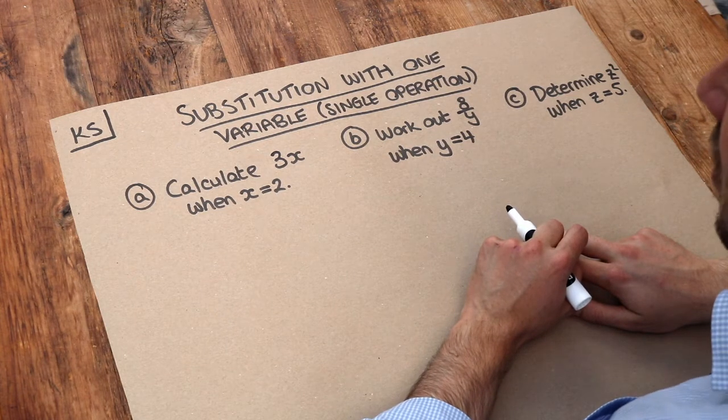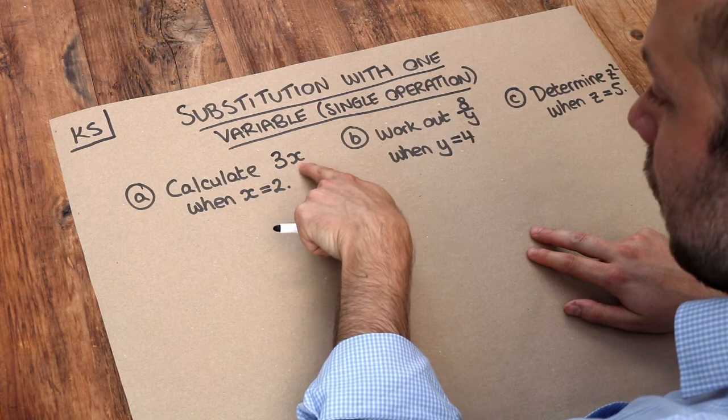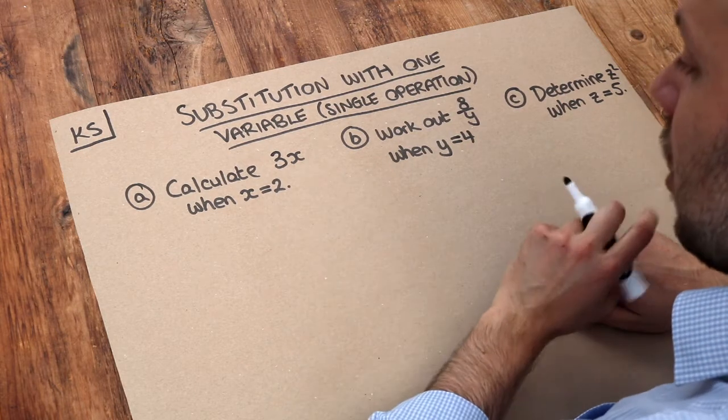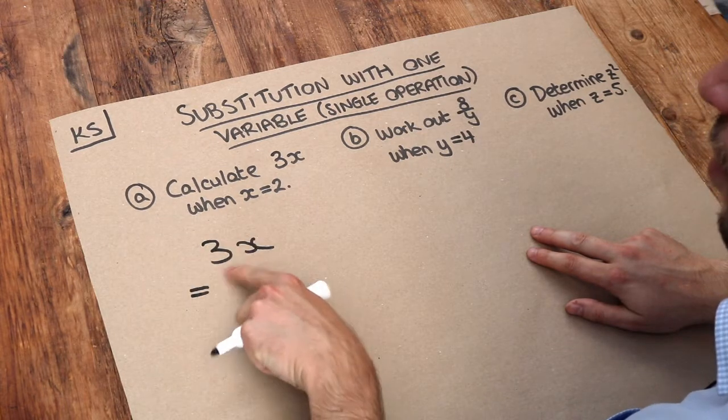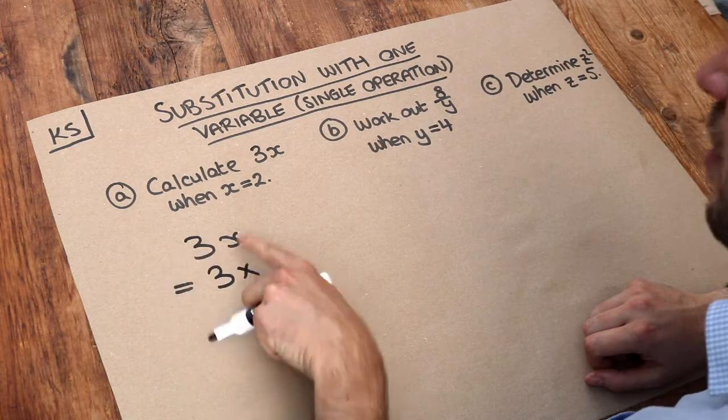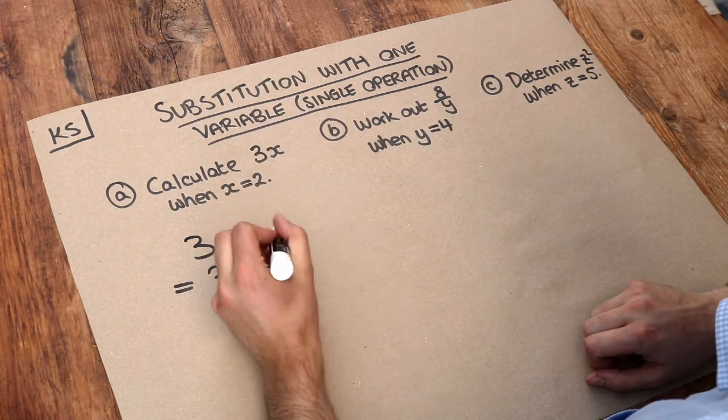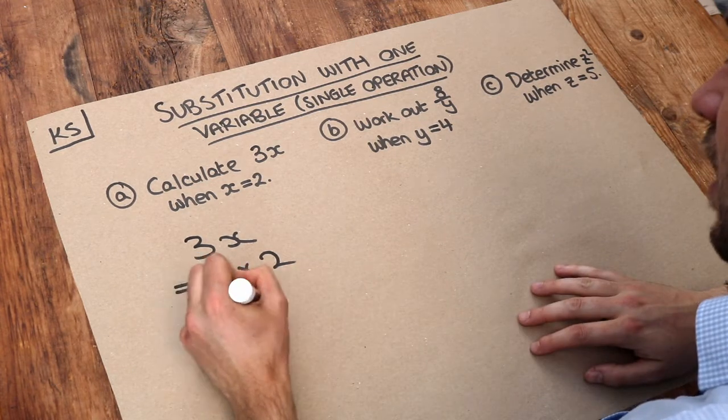Well all we need to do is simply replace each occurrence of that variable, the letter x here, with 2. So when we write out 3x, remember that means 3 times x, and so we could write 3 times, but instead of x, because we know x is 2, we're going to write 2, and that is equal to 6.